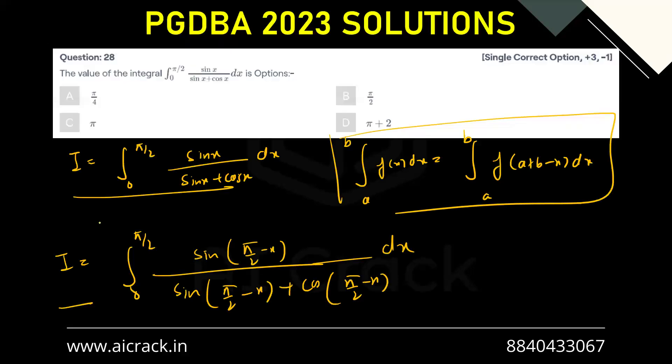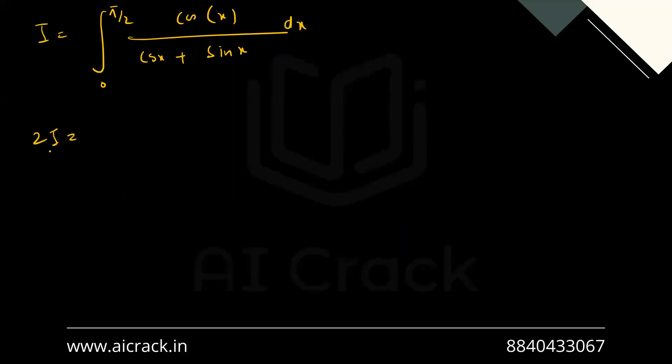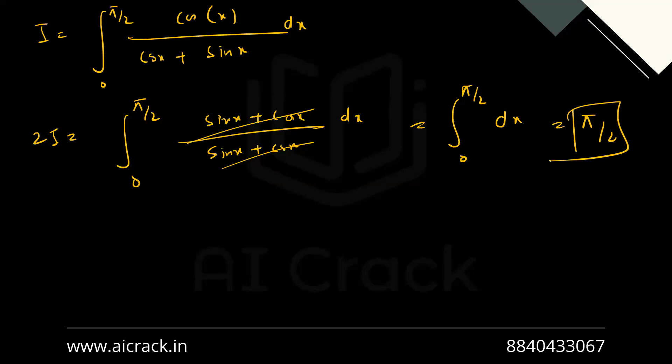So we'll be getting 2I. So basically adding this one and this one, 2I equals 0 to pi by 2, we'll be getting sin x plus cos x divided by sin x plus cos x dx. So this gets cancelled out. So what we have got is integral 0 to pi by 2 dx. That is nothing but pi by 2 only.